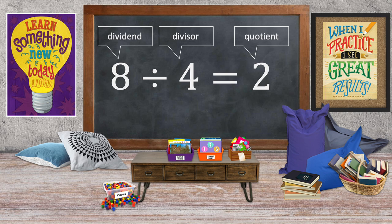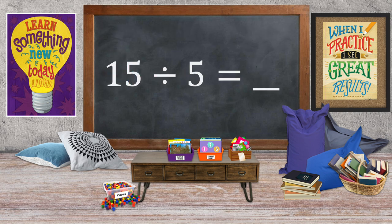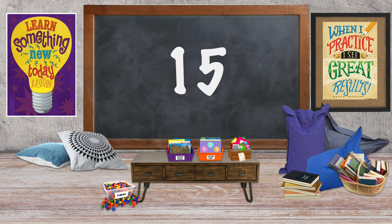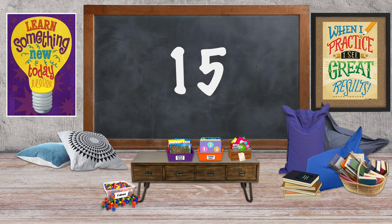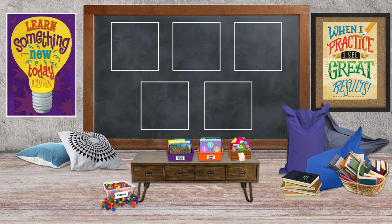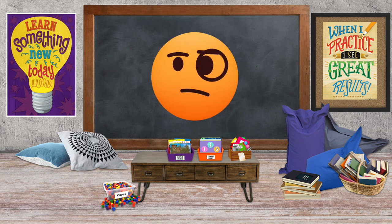Here's a division sentence: fifteen divided by five equals what? We can also read it to say, fifteen divided into five equal groups gives us how many in each group? Since we know the total number of things we're dividing — fifteen — and the number of groups we're breaking them into — five — we can solve for how many in each group.